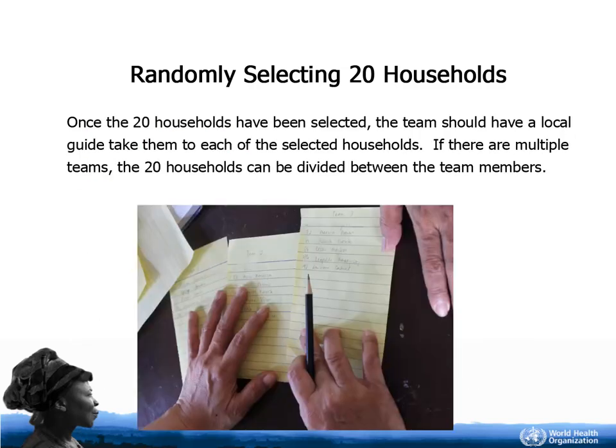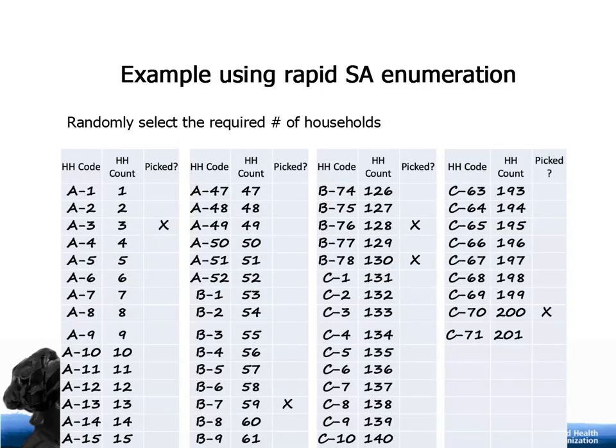Once the 20 households have been selected, the team should have a local guide take them to each of the selected households. Here, you can see an example of which households were chosen from this household enumeration method.